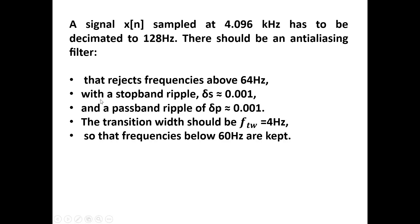The other specifications given are: stopband ripple delta S of 0.001, a passband ripple of 0.001, and the transition width of the filter should be 4 hertz so that frequencies below 60 hertz are kept. The passband frequency is 60 hertz, 64 hertz is the band-limiting frequency, and 4 hertz is the transition width. This is the problem at hand.